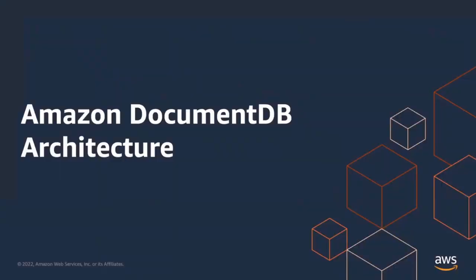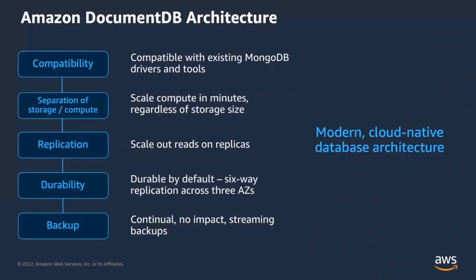Now let's talk about the architecture and capabilities. Compatibility with MongoDB allows customers to use the same application code, tools, and drivers to seamlessly migrate to a fully managed AWS service. We often see customers migrating from on-premises or even from the fully managed Atlas service into DocumentDB to leverage the benefit of the AWS ecosystem. Separation of storage and compute allows customers to scale their compute in minutes, regardless of storage size — this is huge for customers storing tens of terabytes of data. Customers can scale with a predictable time of 10 minutes or less, regardless of their storage volume.